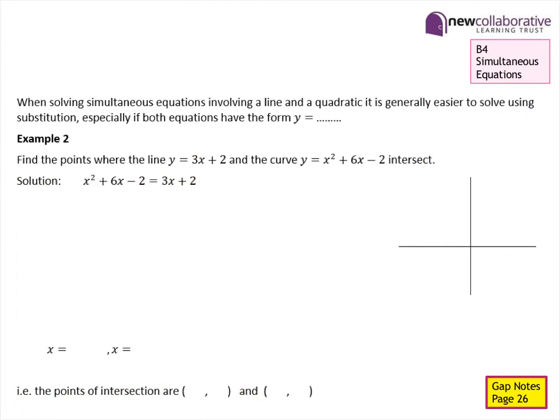Now if we're solving a pair of simultaneous equations where one equation is not linear — such as finding a point of intersection between a straight line and a quadratic — it's generally easier to solve using substitution. This is especially the case if both equations already have the form y equals some function of x. In this example, we're going to find the points where the line y equals 3x plus 2 and the quadratic curve y equals x squared plus 6x subtract 2 intersect each other.